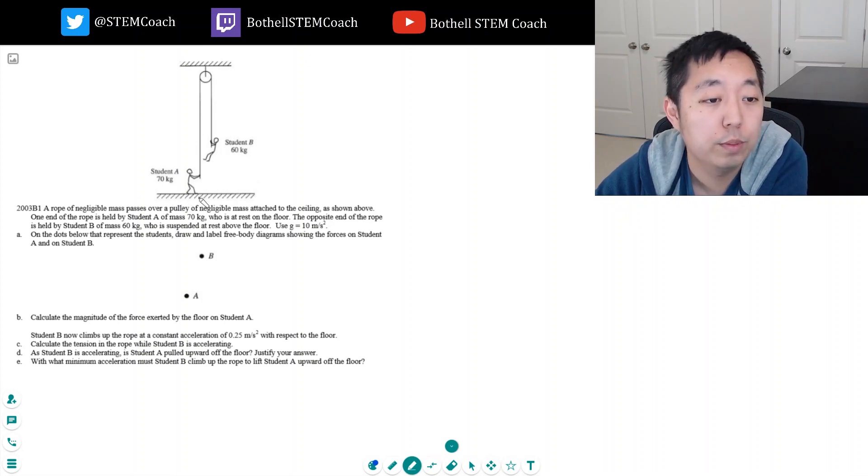A rope of negligible mass passes over a pulley of negligible mass attached to the ceiling as shown above. One end of the rope is held by student A of mass 70 kilograms who is at rest on the floor. The opposite end of the rope is held by student B of mass 60 kilograms.